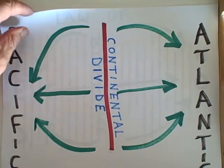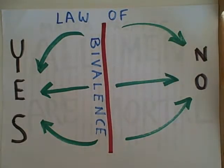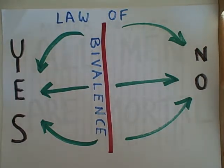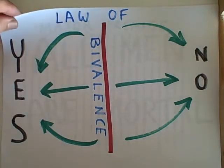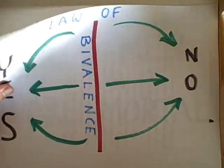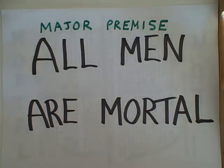Well, this reminded me of Aristotle's law of bivalence: a given predicate is either true for a given subject or it is not true for a given subject. With this we can take any deductive syllogism and draw these kinds of logic paths.